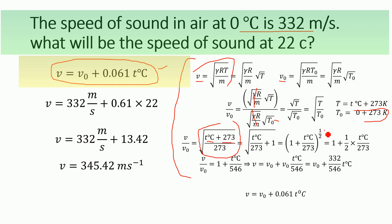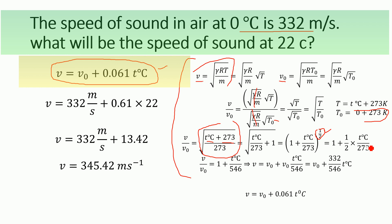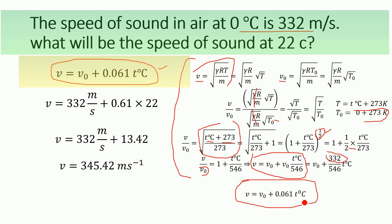This is a binomial expansion. Considering the form (1 + x) to the power 1/n, we get 1 plus n times x. Applying this with n equal to 1/2 and x equal to t divided by 273, and then multiplying 2 by 273 gives 546. So v divided by v-naught equals 1 plus t divided by 546. Multiplying both sides by v-naught, where v-naught is 332 meters per second, we arrive at the final equation.